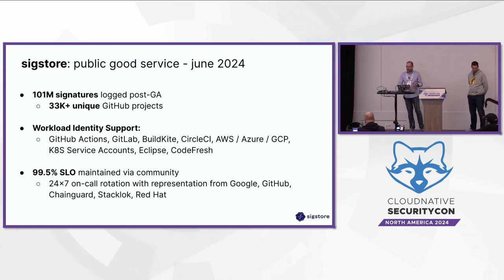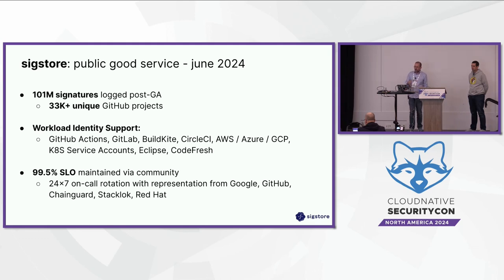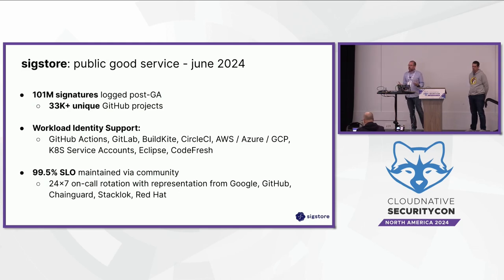We have a public good service — like Let's Encrypt, we realized we needed to run our own infrastructure. There's a community-run public Rekor and public Fulcio that a majority of community users leverage for signing and verification. We've hit 101 million signatures since going GA, with 33,000 unique GitHub projects. Workflow identity support has expanded, and we have an SLO at 99.5% maintained very well. It's an on-call rotation system with PagerDuty, acting like a proper SRE team with folks from Google, GitHub, ChainGuard, StackLock, and Red Hat.